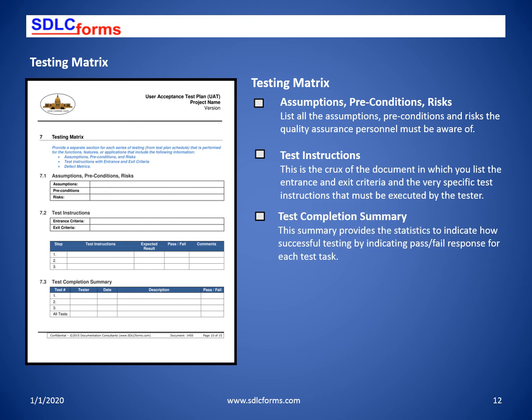Utilize the test plan schedule to summarize pre-testing conditions. The assumptions, preconditions, and risks should also include all dependencies and constraints. The test instructions will list each step number and identify the specific step-by-step instructions that the tester must execute, the expected result, whether it passed or failed, and any pertinent comments. The test completion summary identifies the test number, the tester's name, date executed, a description of the test, and whether it passed or failed.